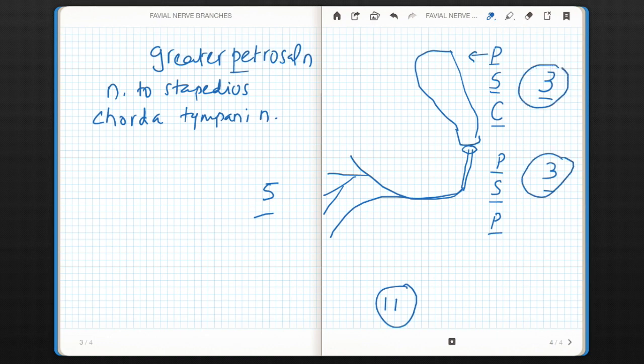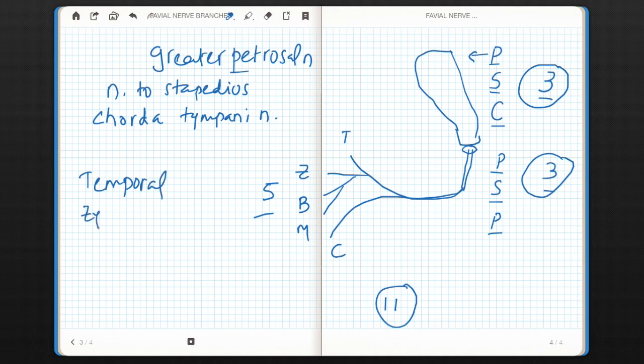Now there are 5 terminal branches and for that again you need to remember another mnemonic and that is T, Z, B, M, C. So T stands for temporal, Z stands for zygomatic branch.